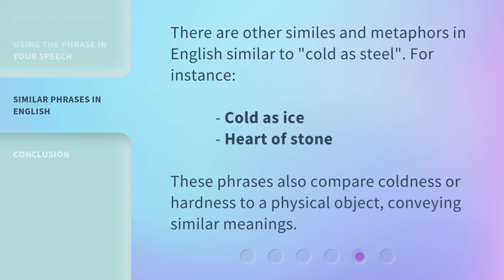There are other similes and metaphors in English similar to 'cold as steel.' For instance, 'cold as ice' and 'heart of stone.' These phrases also compare coldness or hardness to a physical object, conveying similar meanings.